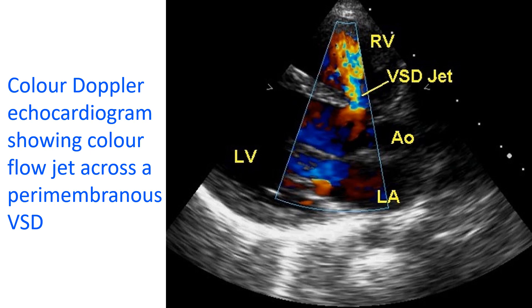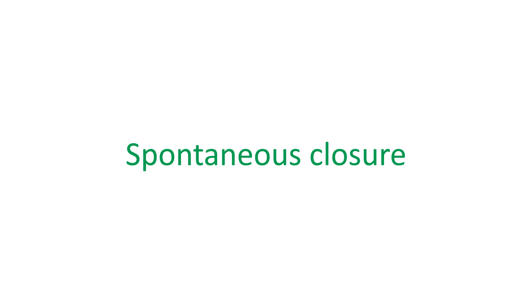Perimembranous VSD can be documented by an echocardiogram as shown here. When a perimembranous VSD is detected in an infant, there is a chance that it can close spontaneously over a period of time. The chance for spontaneous closure is more for a small VSD than a large VSD. Even large VSDs can decrease in size gradually, and if a large VSD decreases in size later, it may be left alone and followed up with certain precautions like prompt treatment of all infections.